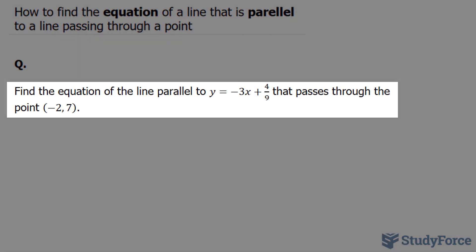The question reads: find the equation of the line parallel to y equals negative 3x plus 4 over 9 that passes through the point negative 2 and 7.